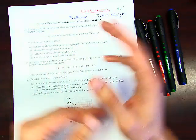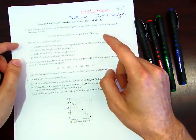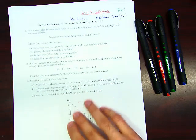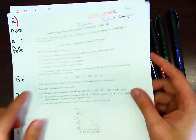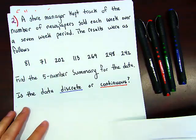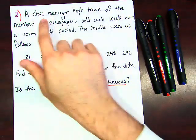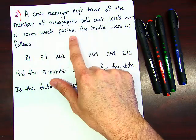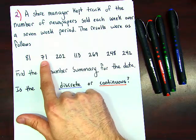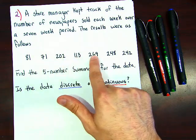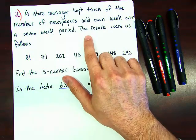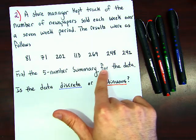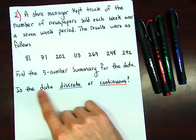Welcome back. We did question one, so let's go through question two for the sample final for statistics, Math 132. Here is question two: a store manager kept track of the number of newspapers sold each week over a seven-week period. We have seven data values, and the results were as follows. Find the five number summary for the data. Is the data discrete or continuous?